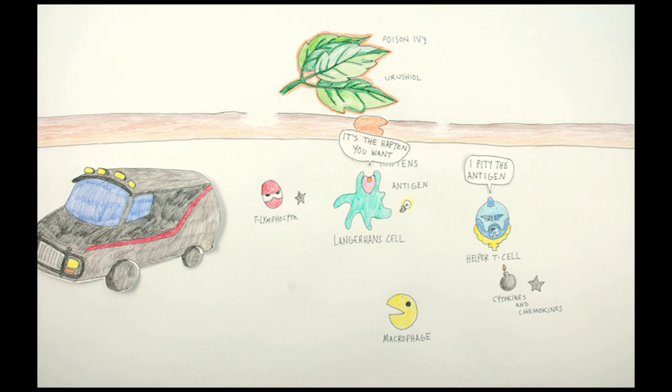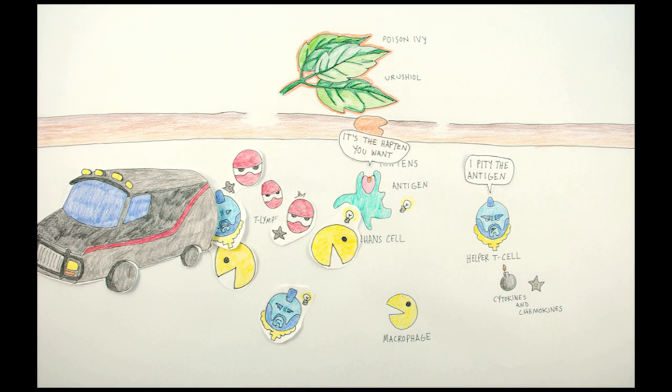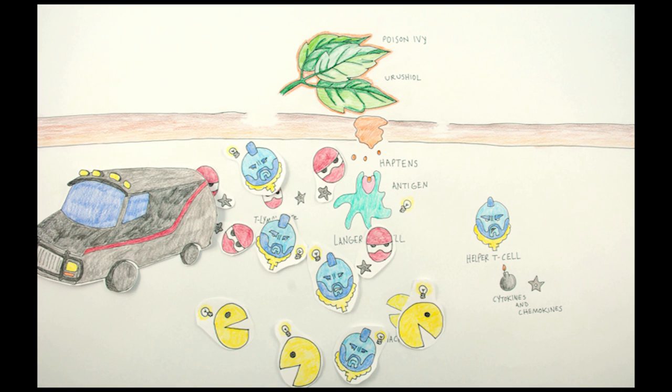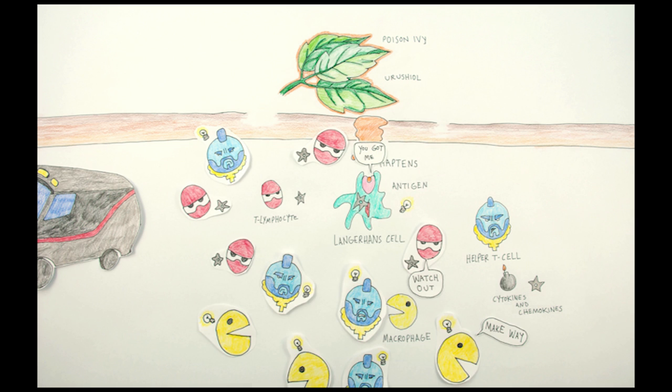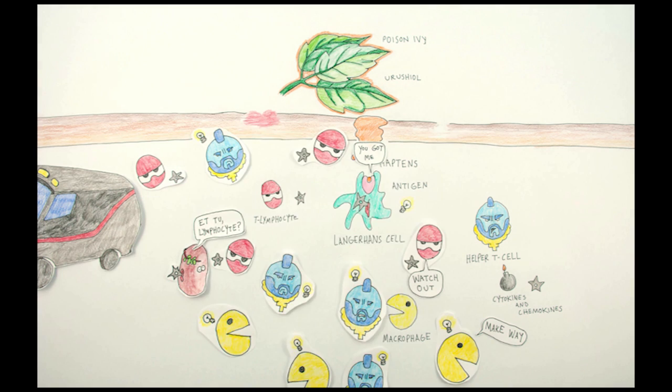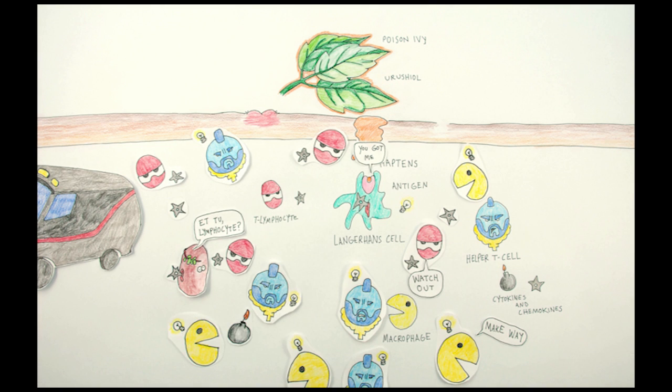All of these cells send more signals that draw more cells. The overall effect is like a faucet being turned on high. The killers destroy the urushiol-bound tissue, but collateral damage occurs and healthy cells can also be killed. Your skin turns red and blisters fill with fluid as the deluge of cell killers continues.